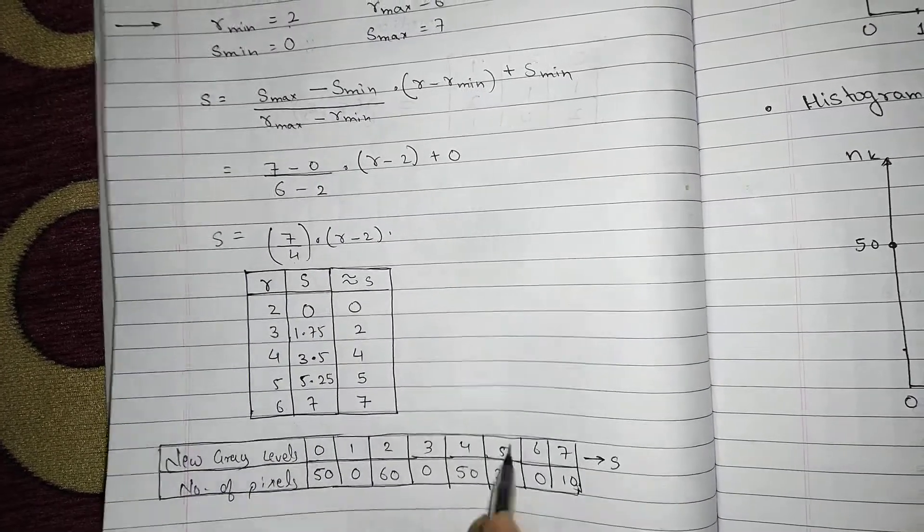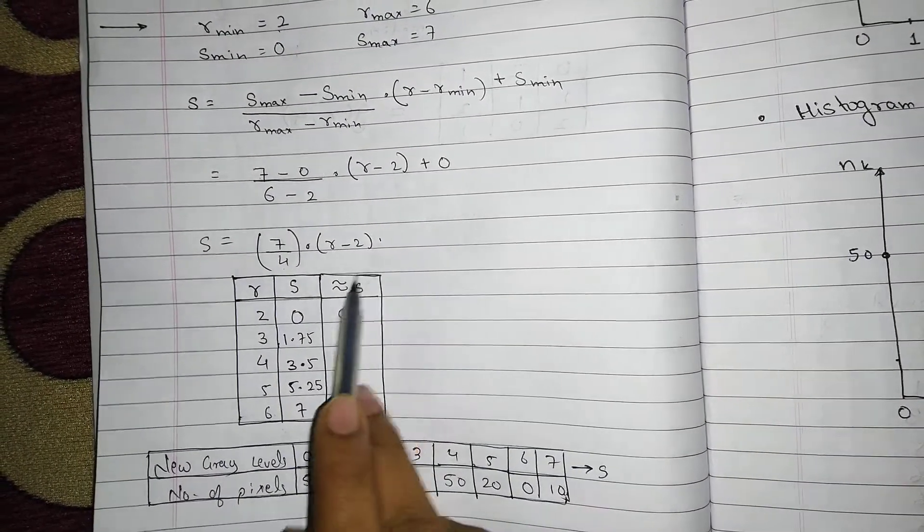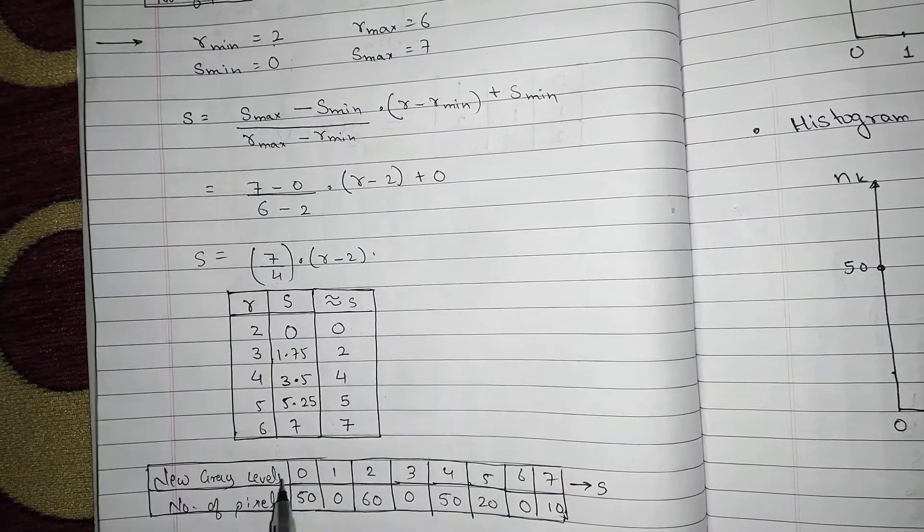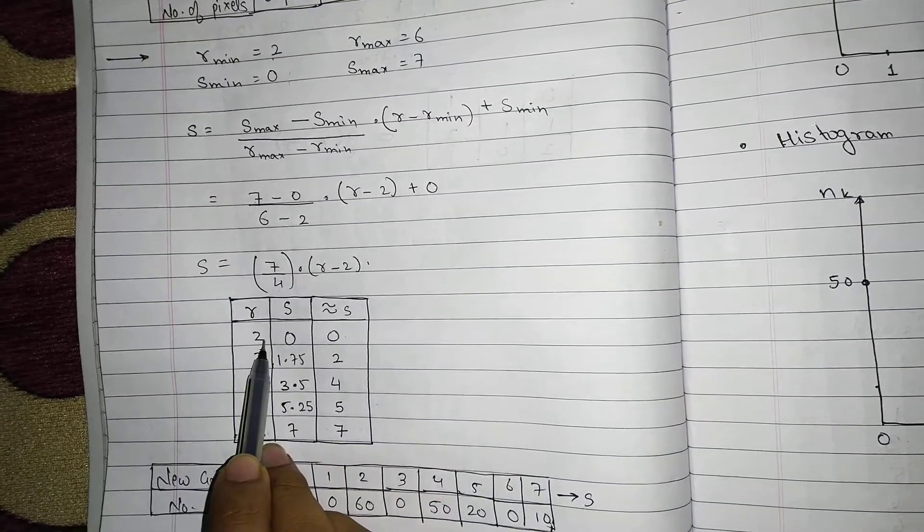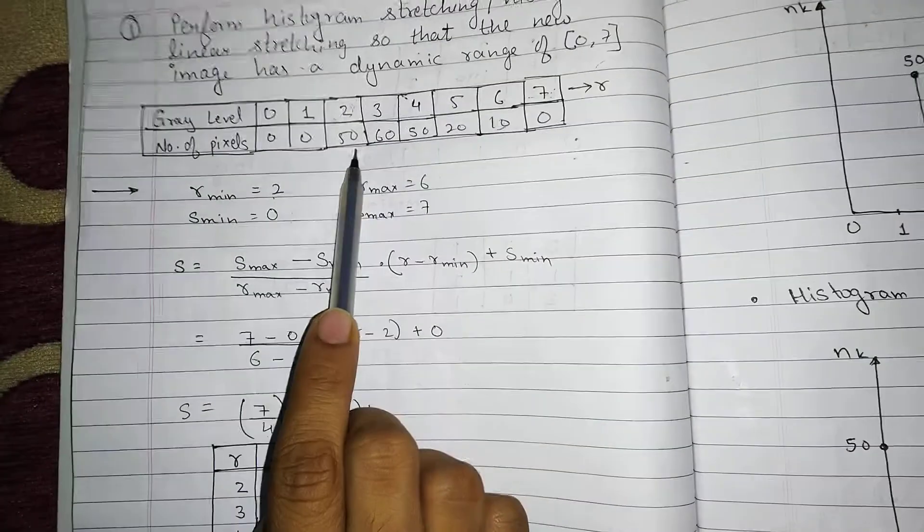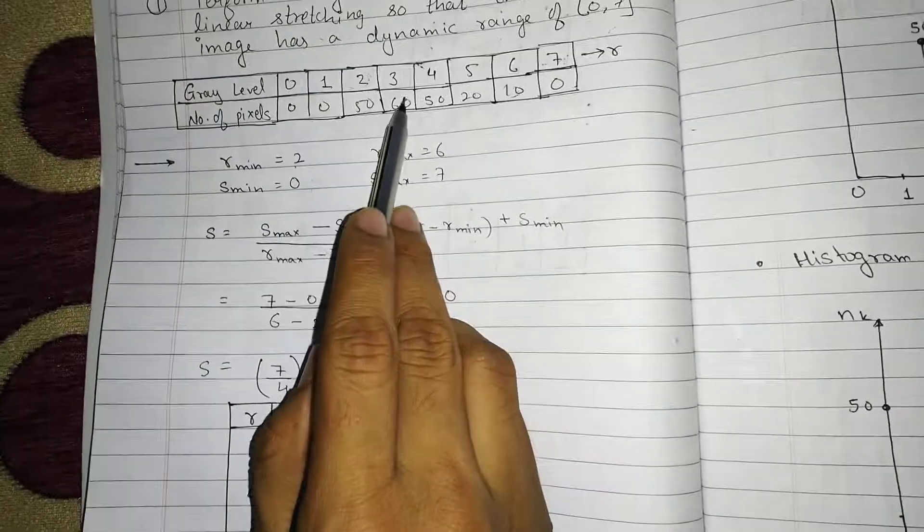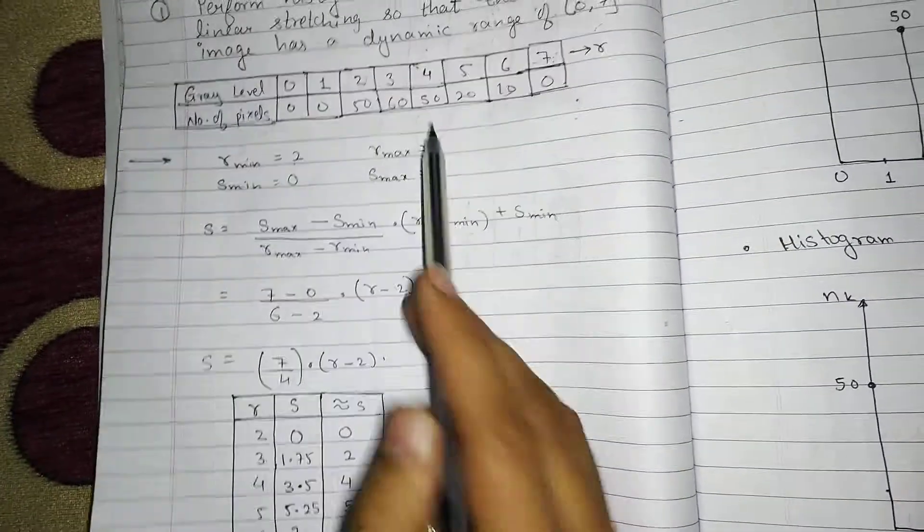So what are my new gray values? The gray levels are 0, 1, 2, 3, 5, 6, 7 and this corresponds to my new S. 0 corresponds to now 50 because 0 corresponds to 2 and 2 in the question is 50. 2 corresponds to 3 and 3 in question is 60. 4 corresponds to 4 that is nothing but 50.